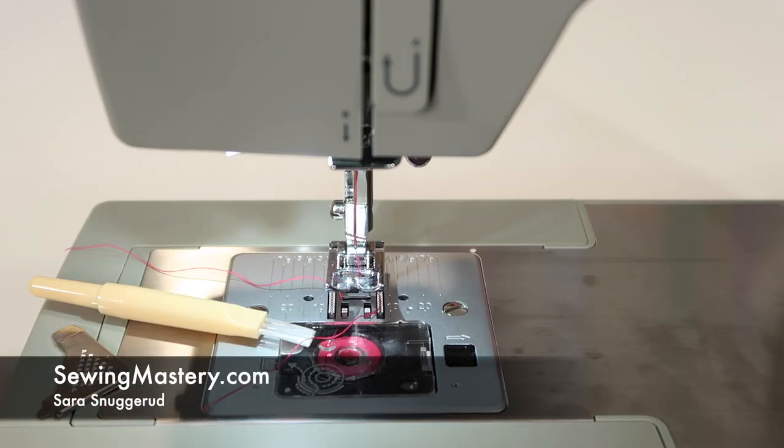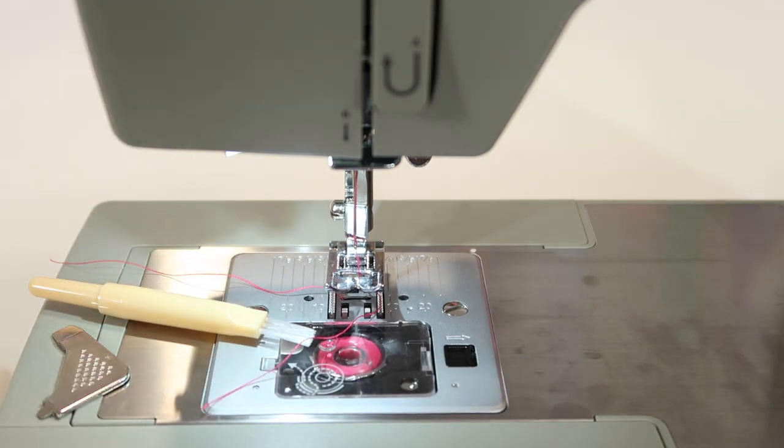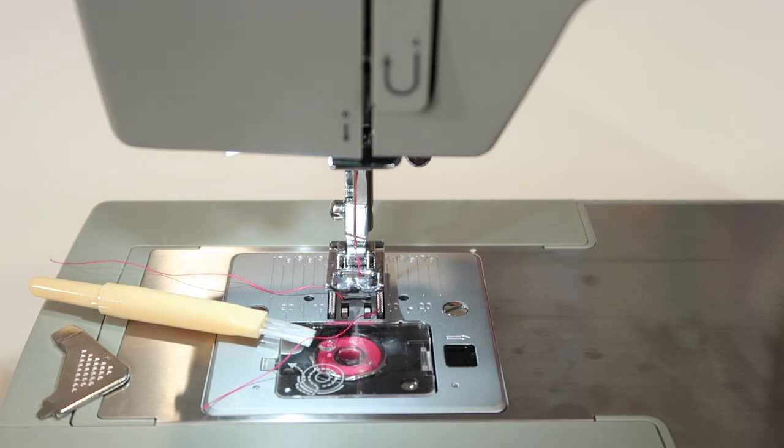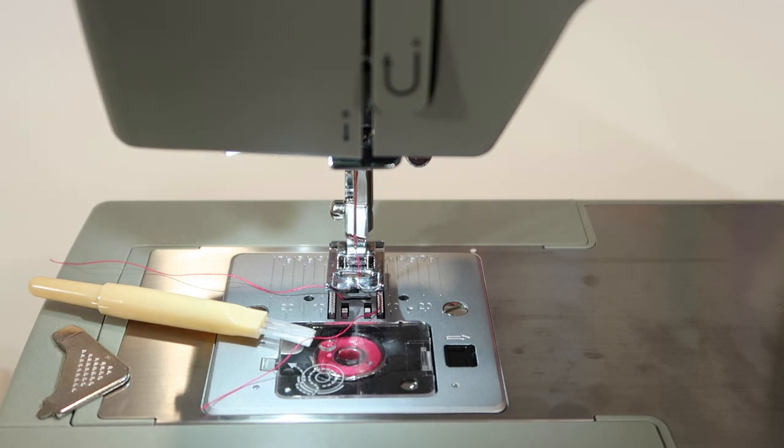Anytime a sewing machine starts to give you some fits, it's time to get underneath the throat plate and clean it out. We're working on the Singer Heavy Duty 4452 sewing machine, but this is very similar to a lot of different Singer machines out there, and it's something that you need to do when things go wrong.